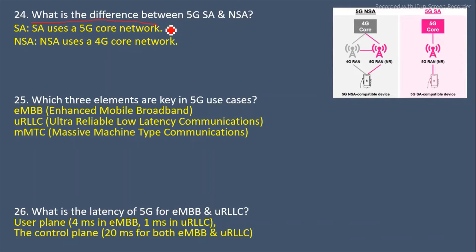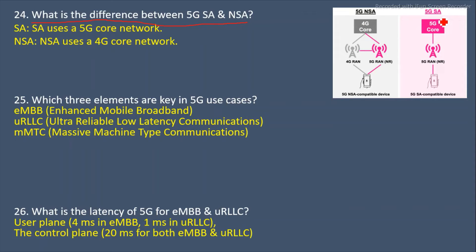Next question: What is the difference between 5G SA and NSA? SA means Standalone and NSA means Non-Standalone. In the SA case we are using a 5G core, whereas in the NSA case we are using a 4G core. That is the major difference between SA and NSA.